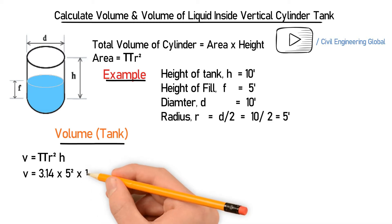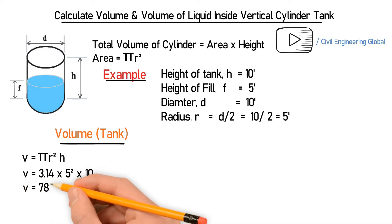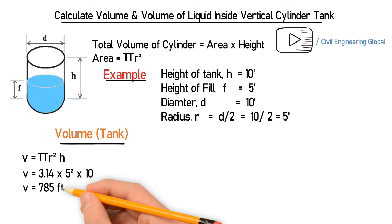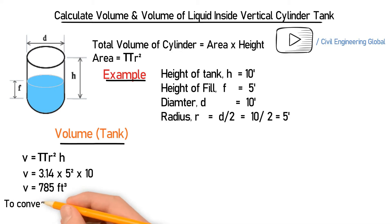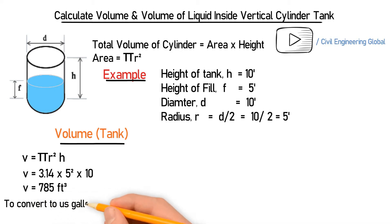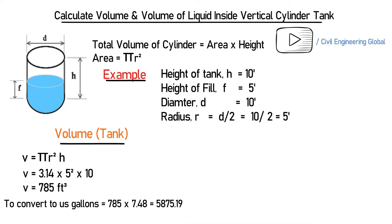This gives us the volume equal to 785 cubic feet. To convert this into US gallons, you multiply by 7.48, since one cubic foot equals 7.48 US gallons. So the volume in US gallons is 785 multiplied by 7.48, which equals 5875.19 US gallons.